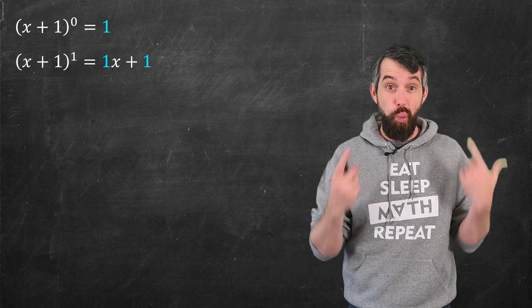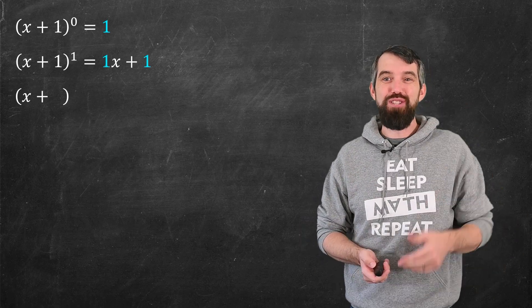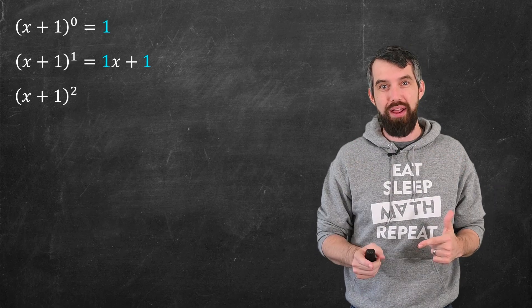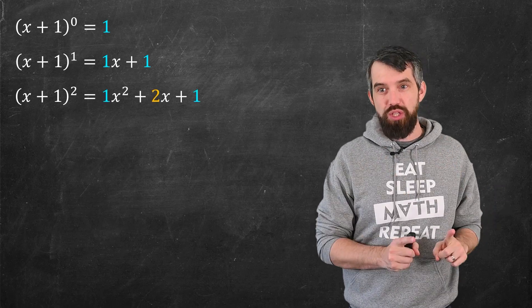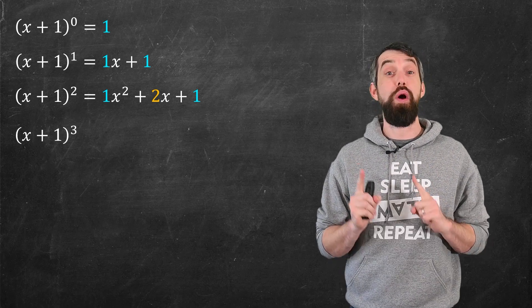Then I can take x plus 1 to the 1, which is just 1x plus 1. I'm not doing anything. But the first one that's sort of interesting is x plus 1 squared. Expand that out, and you get 1x squared plus 2x plus 1. Now let me go one further. I'm going to do x plus 1 cubed.